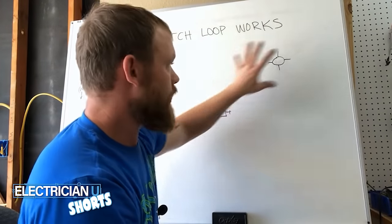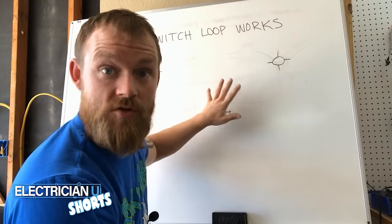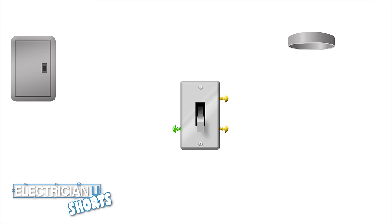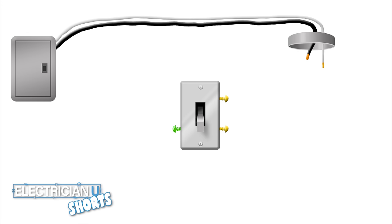So for a switch loop to work, we don't need a neutral down here, which is cool because that frees up one wire. So normally when I wire a switch loop, I have an incoming hot and I have an incoming neutral.